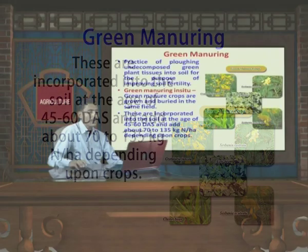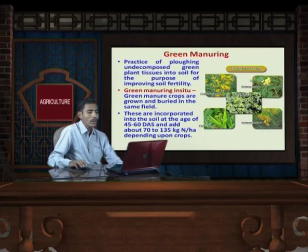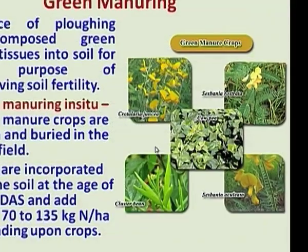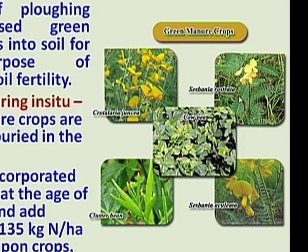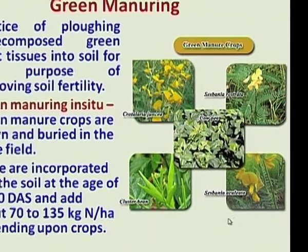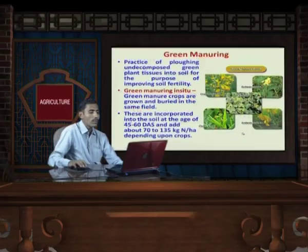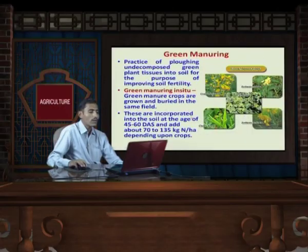Important green manure crops are Crotalaria juncea, Sesbania rostrata, Cowpea, Cluster bean, and Sesbania aculeata. These are the crops which can be used for green manuring.